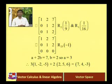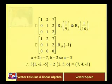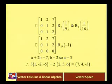The final equations are a + 2b = 7 and b = 2, giving a = 3 and b = 2. Putting these values back: 3·v1 + 2·v2 = 3·(1, -2, -5) + 2·(2, 5, 6) = (7, 4, -3) = v. So v is expressed as a linear combination of v1 and v2.